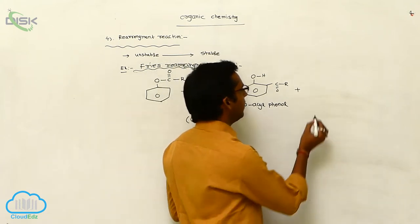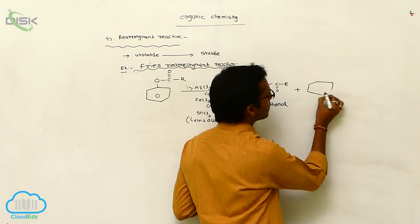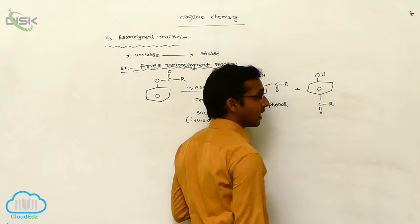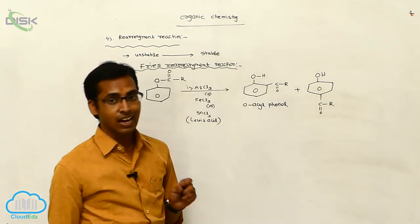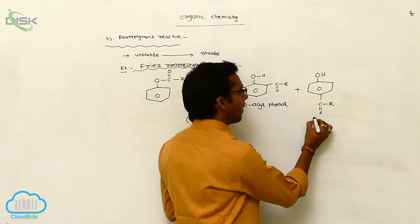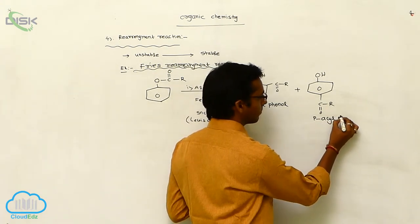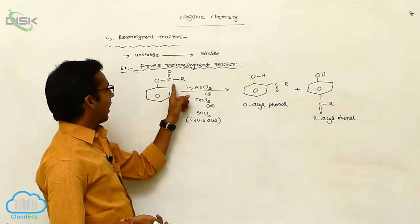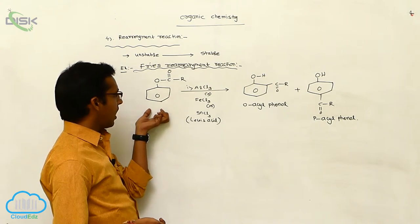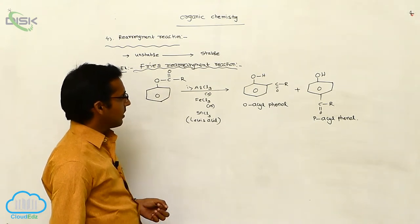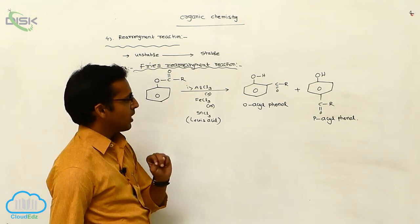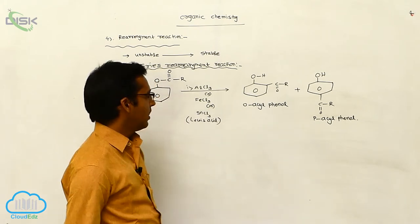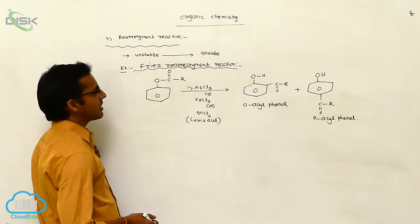Similarly, another product is the para product — paraacylphenol — where the acyl group acts as a carbocation and attacks at the para position. So the reactant, orthoacylbenzene, in presence of Lewis acid produces two types of products: one is orthoacylphenol and one is paraacylphenol. This is your Fries Rearrangement Reaction.